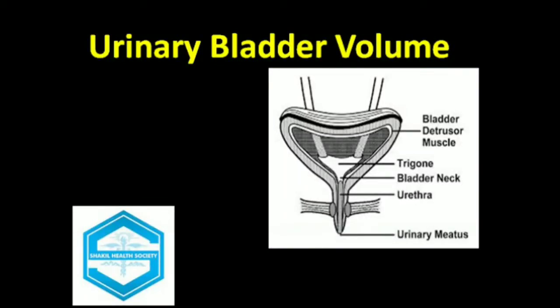Measurement of the urinary bladder volume requires a full bladder. The patient should lie in the supine position. The convex probe is to be used with a frequency of 3 to 6 MHz. The method is to acquire a transverse plane for the measurement of the width and depth, and then the longitudinal image which will provide the measurement of the length.